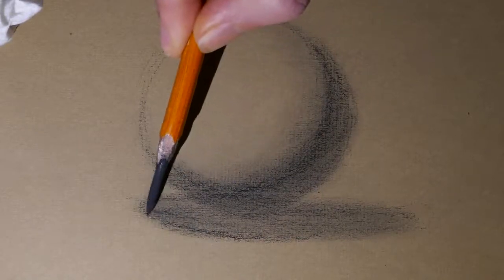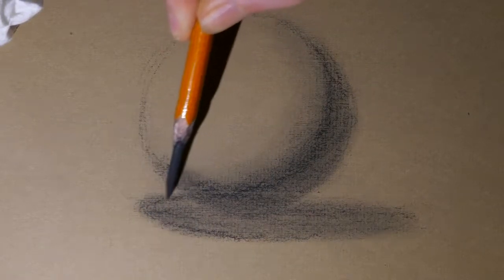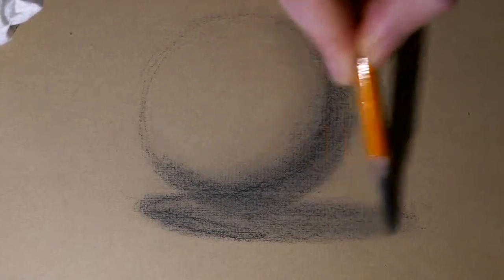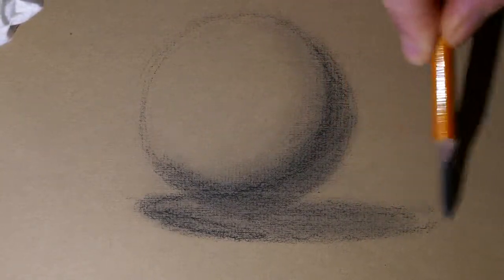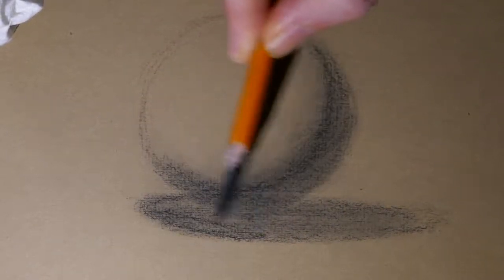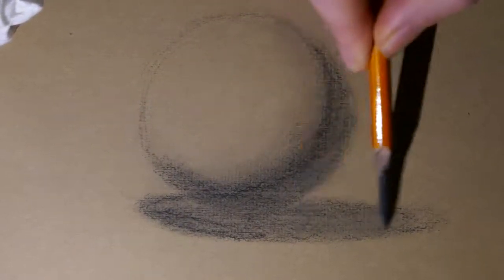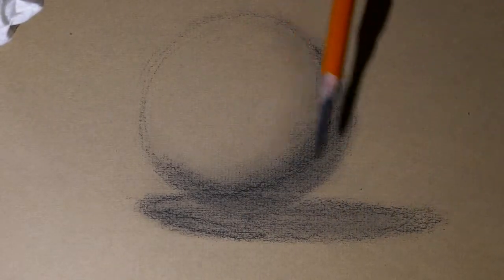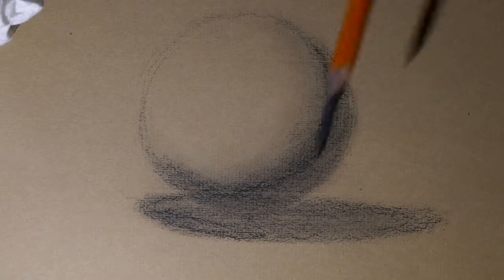I'm going to start being a little more crisp and decisive with my shape of my cast shadow, and maybe being a little less harsh with it as it goes away from the object. So this will appear like a slightly softer edge back here.